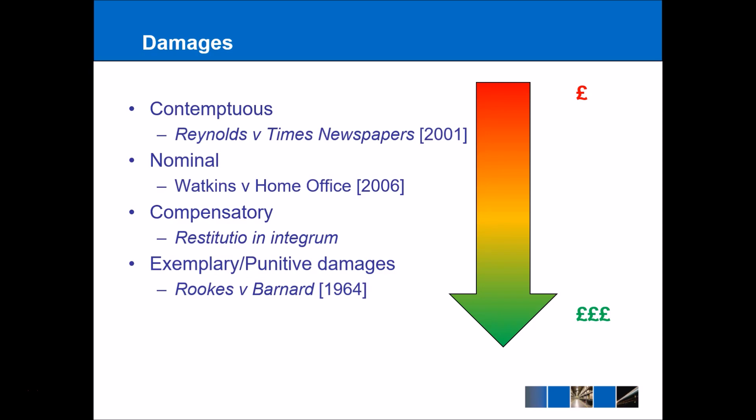Starting with contemptuous damages, where the claimant would get the least amount of money — this is where the court is being contemptuous against the claimant, basically saying that you do technically have a case, but this action should not have been brought. So in the Reynolds example, Times Newspaper Limited published something that was technically defamatory against Reynolds, but it was in the public interest to do so, and so the court only awarded Reynolds damages of one single penny.